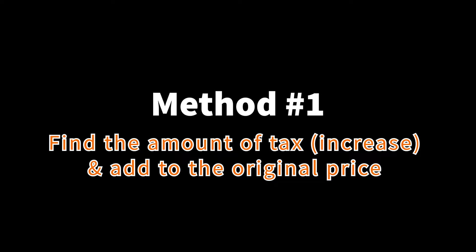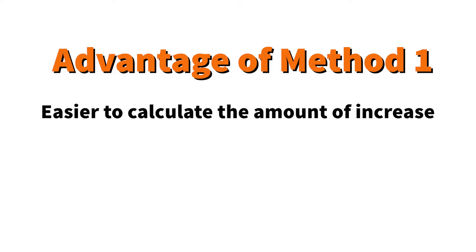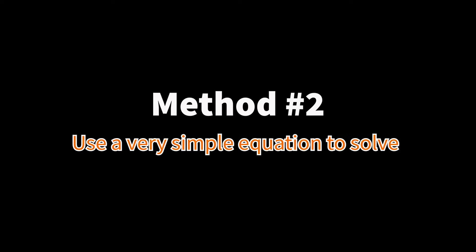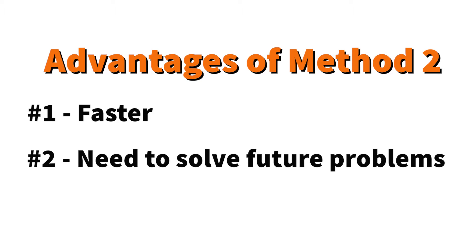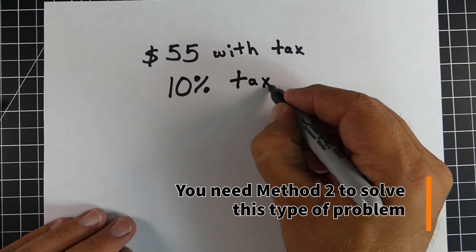All right, in method number one, what we're going to do is we're going to find the amount of the tax or the tip and then we're just going to add it to the original price. Now the advantage of this method is it's easy to calculate how much tax or tip we have. Now with method number two, we're going to use a very simple equation to solve the total amount. Now the advantage is here, it's a lot faster.